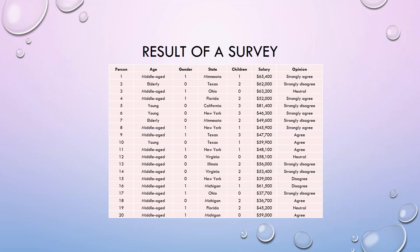Variables are listed in columns, which include person number, age, gender, state, children, salary, and opinion. Observations are numbered from 1 to 20 in rows.